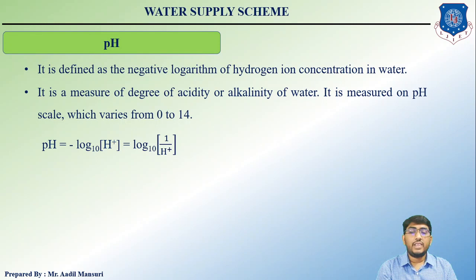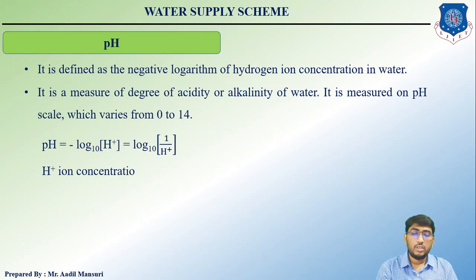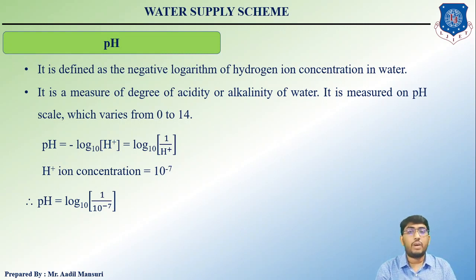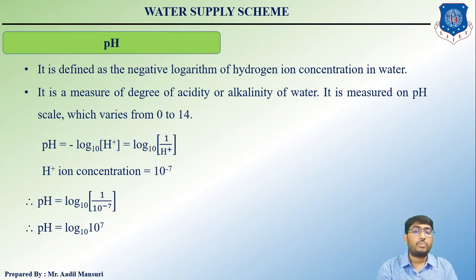pH can be expressed as the negative logarithm of hydrogen ion concentration, or as log base 10 of 1 over [H⁺]. For example, if the H⁺ ion concentration is 10⁻⁷, then pH = log base 10 of (1 / 10⁻⁷) = log base 10 of 10⁷ = 7. Therefore pH equals 7.